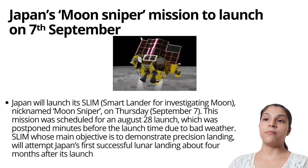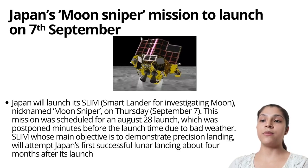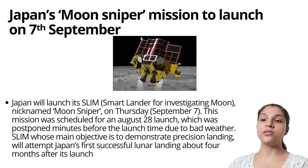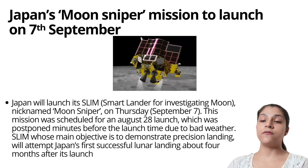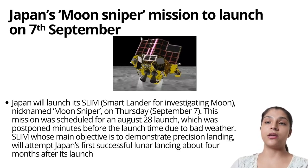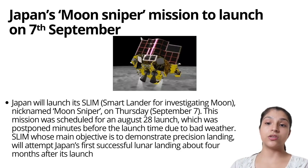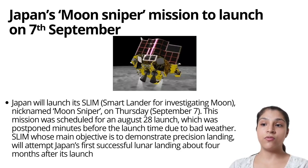Japan's Moon Sniper mission will launch on the 7th of September. Its name is SLIM and its full form is Smart Lander for Investigating Moon. The nickname is Moon Sniper. The mission was originally scheduled on the 28th of August. The main objective was to demonstrate precision landing. If this attempt is successful, it will be Japan's first successful lunar landing, launching approximately 4 months after scheduling.